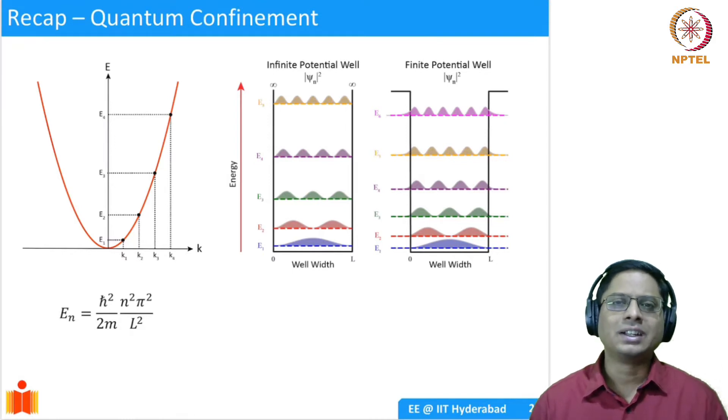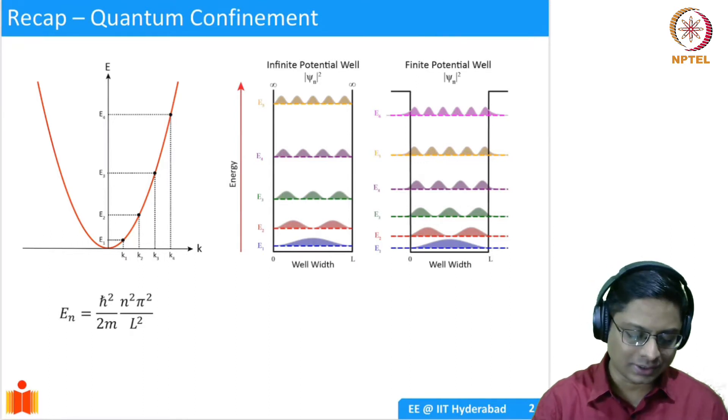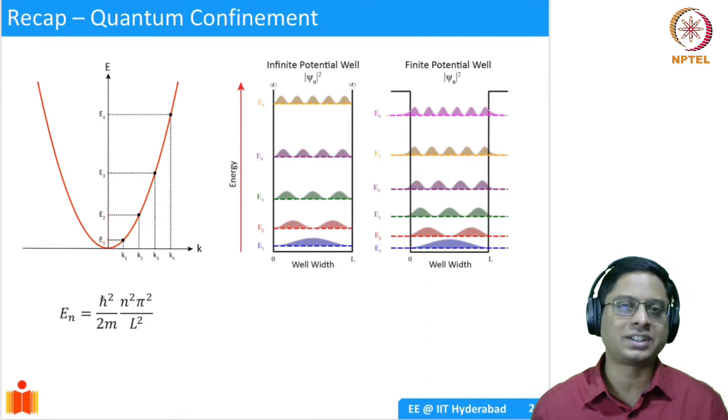We discussed a free electron, how the dispersion is in a parabolic shape. And then if you confine an electron to a small dimension, for example, a potential well of dimension L, then you see the energies are no longer continuous, but they are discrete. For example, energies are E1, E2 and so on. So only these discrete states are allowed.